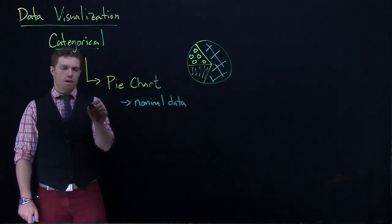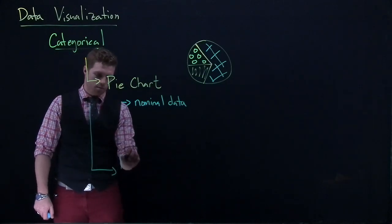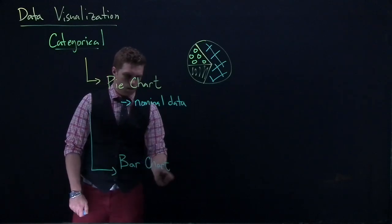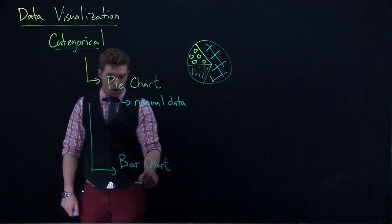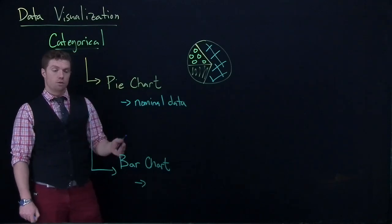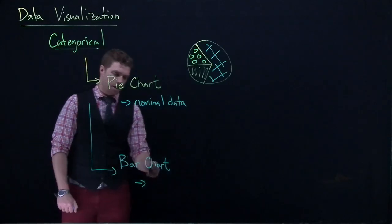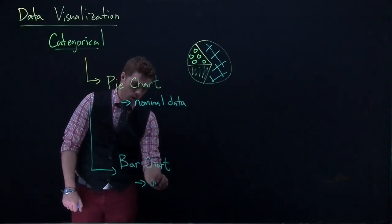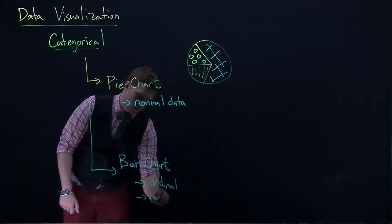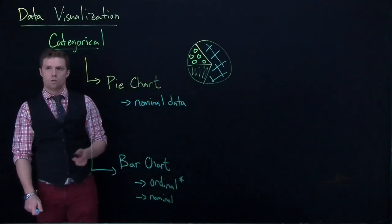And the next one that we have is a bar chart or a bar graph. And a bar chart, you can use it, there's nothing wrong with using it with nominal. You can absolutely do a bar chart with nominal. But this is the graphic of choice if we have ordinal data. So we want to put ordinal here. We could also do nominal here. So it's really good though for ordinal.